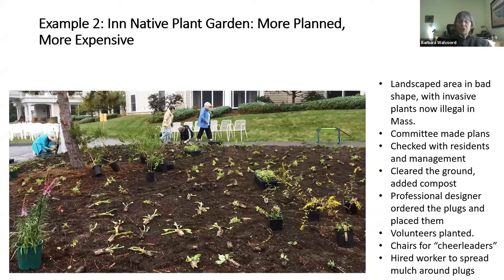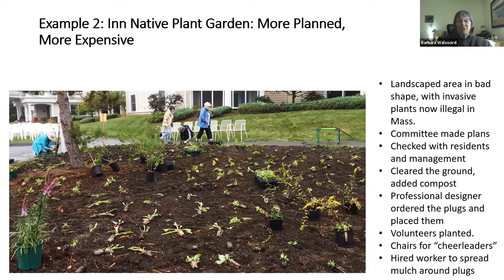This is the second example. First was Huckleberry Lane with its shrubs and accidental meadow. Now comes the Inn Native Garden — a small area, more planned and more expensive. It was a landscaped area in bad shape with invasive plants that are now illegal in Massachusetts. Get the list of illegal plants for your own state and see if you have any on your campus — it was a very good argument to our community and management that in front of our inn, despite touting ourselves as a nature-loving retirement community, we had plants that if installed new would be breaking the law. This time we had a designer design the garden, source the plants as little plugs, and install them in place.